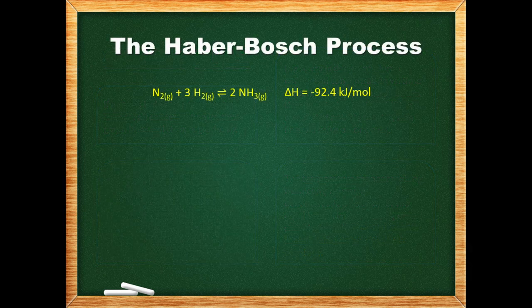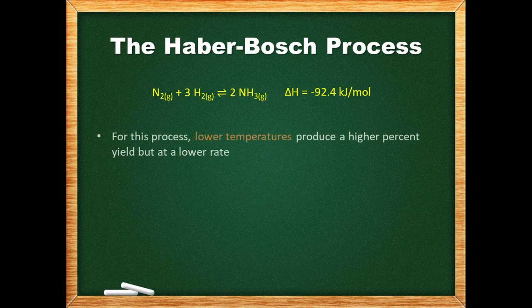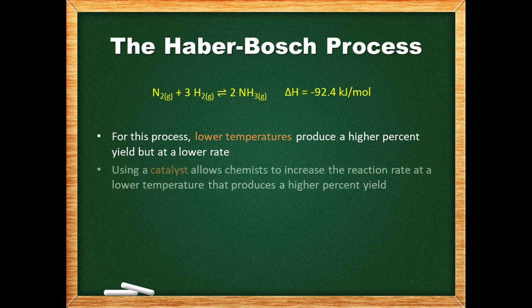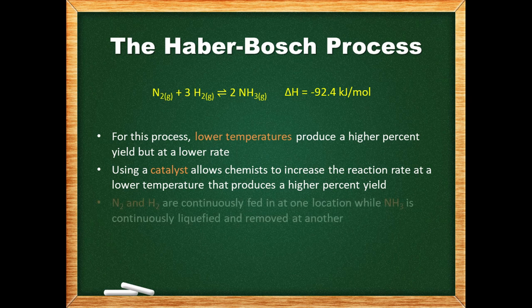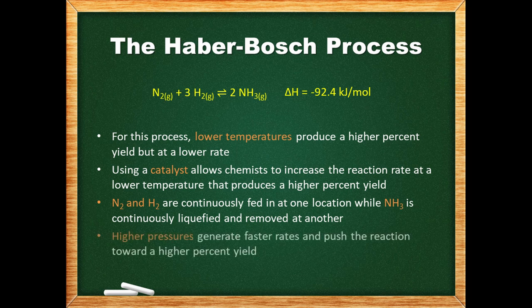Almost all of the world's ammonia is produced via the Haber-Bosch process. Lower temperatures produce a higher percent yield as the reaction is exothermic, but the reaction proceeds at a lower rate. Using a catalyst allows chemists to increase the reaction rate at a lower temperature that produces a higher percent yield. Additionally, nitrogen and hydrogen are continuously fed in while ammonia is continuously liquefied and removed, keeping the forward rate high and the reverse rate low. Higher pressures generate faster rates and push the reaction toward a higher percent yield.